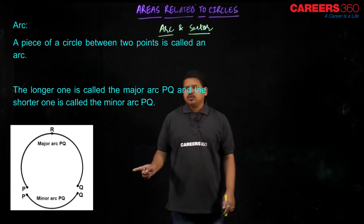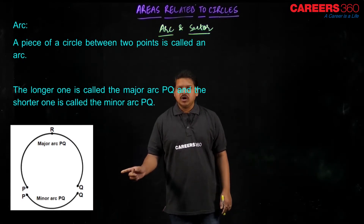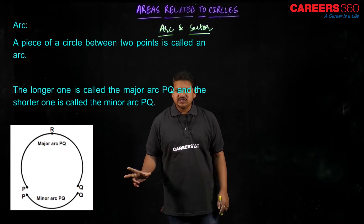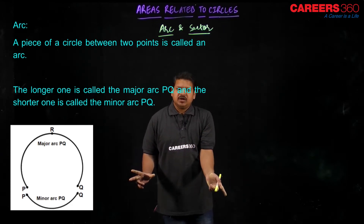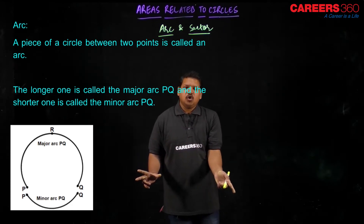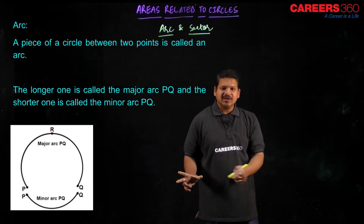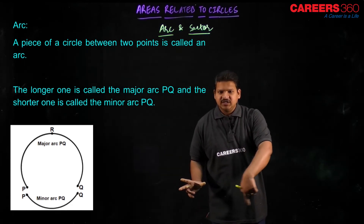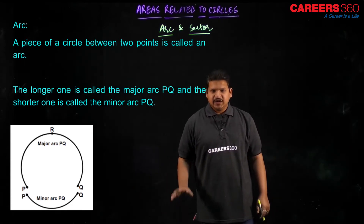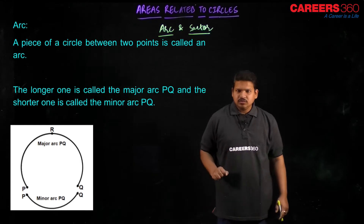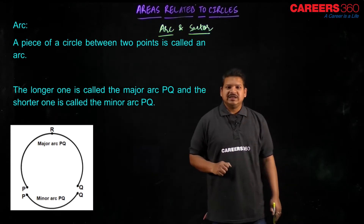As you can see right over here, P and Q are the two points. If I take the major part — the longer part — then it would be a major arc, and if I take the smaller part then it would be a minor arc. I hope it makes sense to you. Now, proceeding towards the sector.